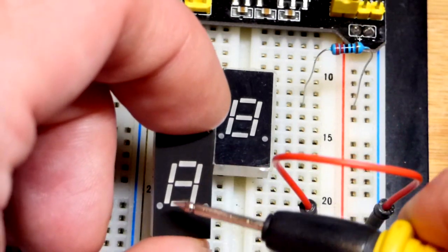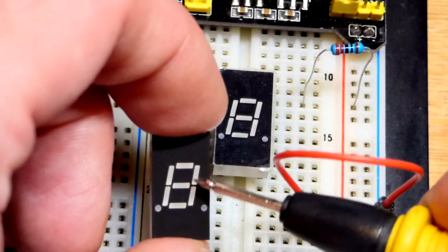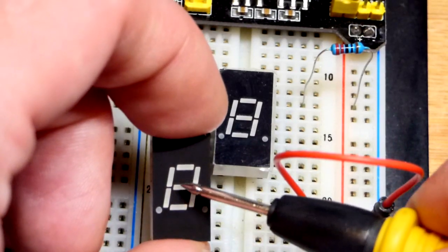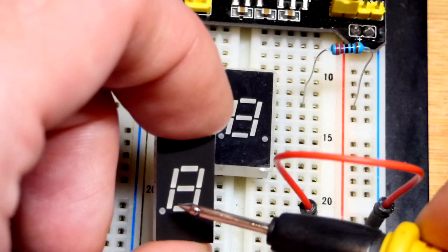So this is why this is called a seven segment display, because we have one, two, three, four, five, six, seven. Seven segments, seven LEDs there.